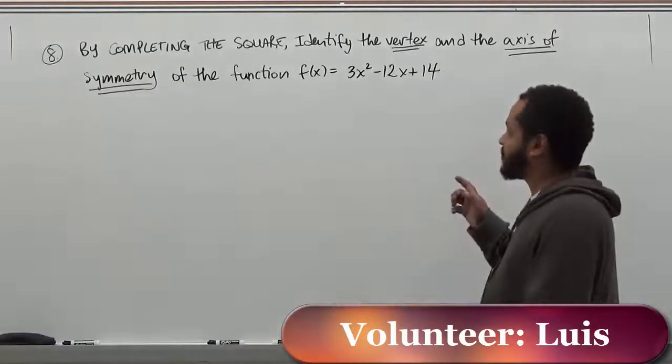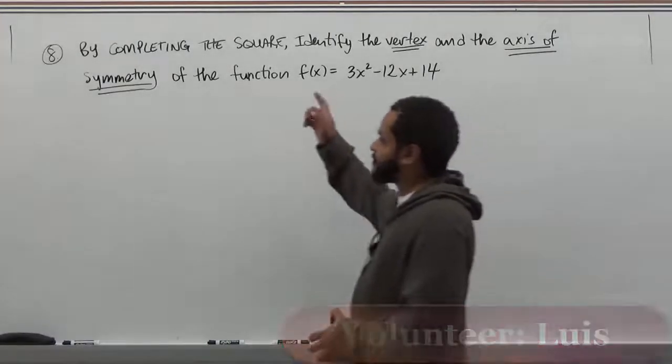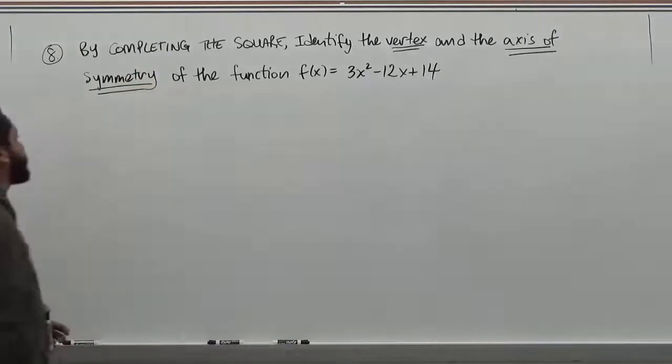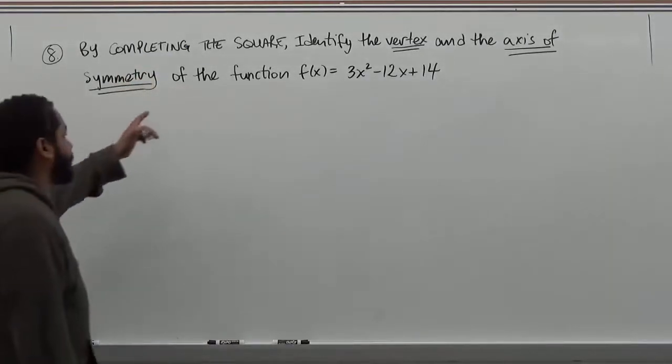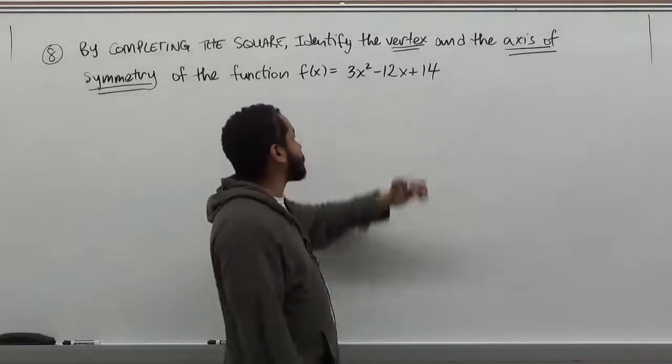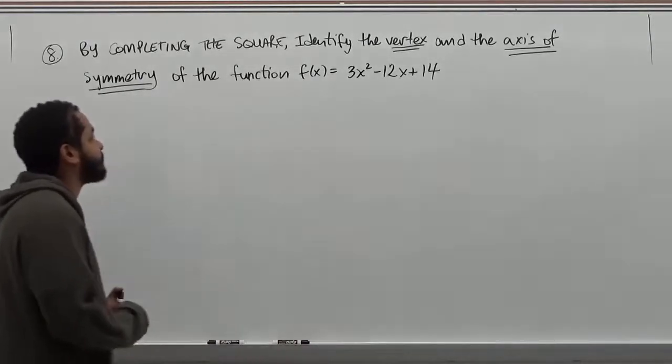In this problem, what we have to do is use completing the square. We see the instruction says, by completing the square, identify the vertex and the axis of symmetry of the function f(x) = 3x² - 12x + 14.